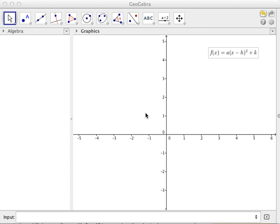Welcome to another GeoGebra tutorial. In this tutorial we're going to investigate the graph of f(x) equals a times (x minus h) squared plus k. As we can see, this is a quadratic function.